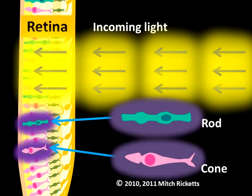Cones are photoreceptor cells that allow us to see colors. The cones are less sensitive than rods, so good lighting is required for color vision. There are three different types of cones, and each of the three types is most sensitive to light of a different wavelength.